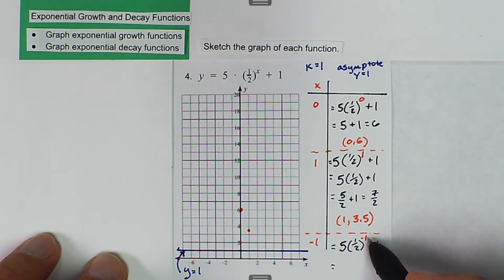So 1 half to the negative exponent says we get to flip that fraction. So we get 5 times 2 plus 1. And we know that that is going to be equal to 11. So 5 times 2 is 10 plus 1 is 11.